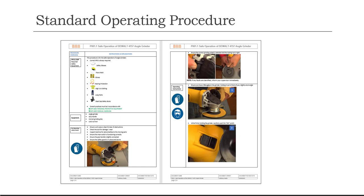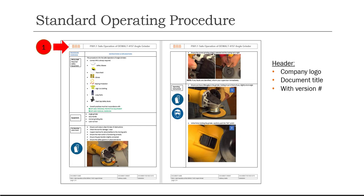Let's get into the detail of a typical standard operating procedure with my recommendation of components. This example has been prepared in Microsoft Word — it's the simplest method for writing instructions. The first component is a header. This is where we place our company logo, the title of the document, and the version number. In this case, the version number is P001.1 and the title is 'Safe Operation of Dewalt 4157 Angle Grinder.' This content sounds pretty much like a safety document, but the procedure can be anything at all — I've just chosen this example since it's easy to understand.